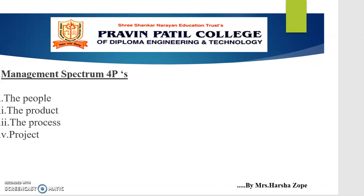Now let's start with the first P, that is People. The People factor is an important issue in software industry. There is a strong need for motivated and highly skilled people for developing the software product. The Software Engineering Institute has developed the People Management Capability Maturity Model, called PM-CMM. Key practice areas for software people include Recruitment, Selection, Performance Management, Training, and Career Development.